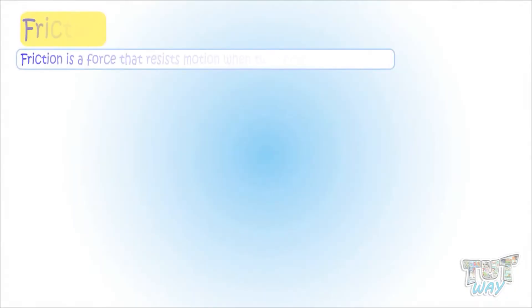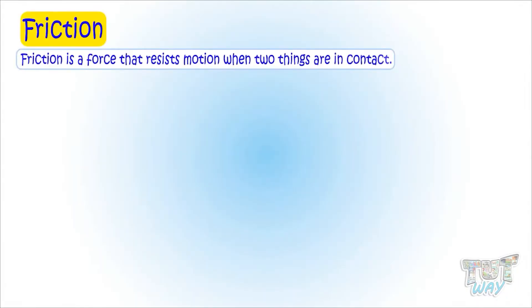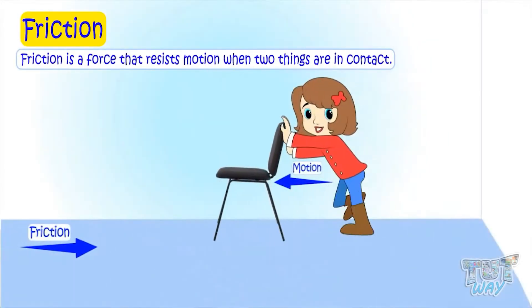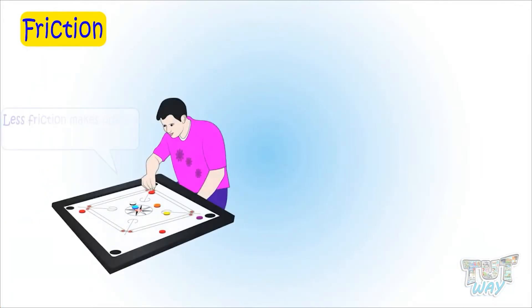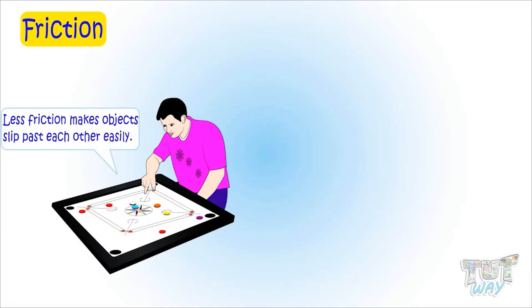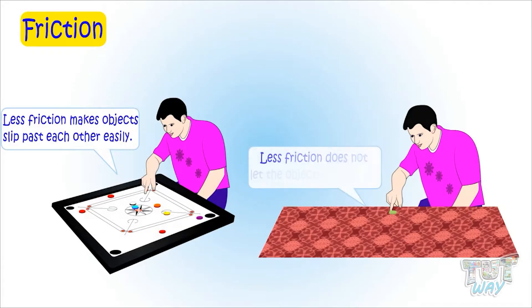We learned that friction is a force that resists motion whenever two surfaces are in contact. When the friction is less, the objects slip past each other easily, and when the surfaces are rough, the objects do not move against each other easily.